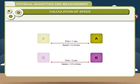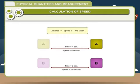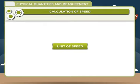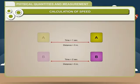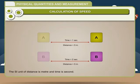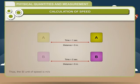If the speed of an object and the time taken are known, then the distance travelled can be calculated by: Distance = Speed × Time taken. The SI unit of speed depends on the units of distance and time. Since the SI unit of distance is metre and time is second, the SI unit of speed is metre per second. Other units include centimetre per second and kilometre per hour.